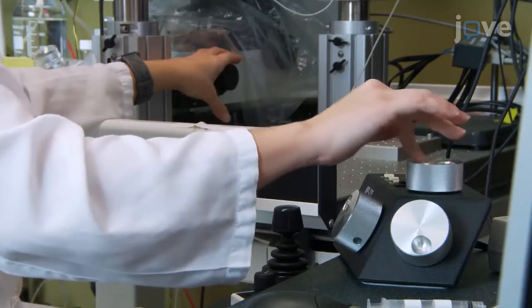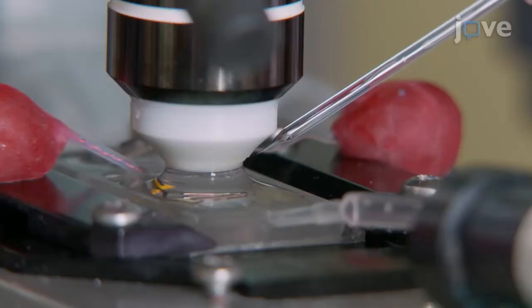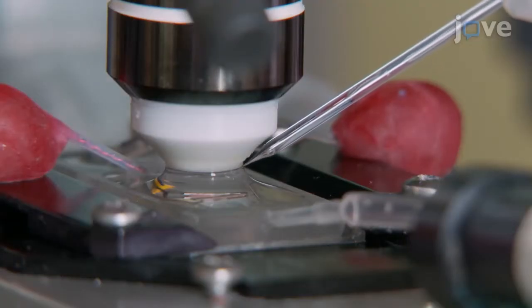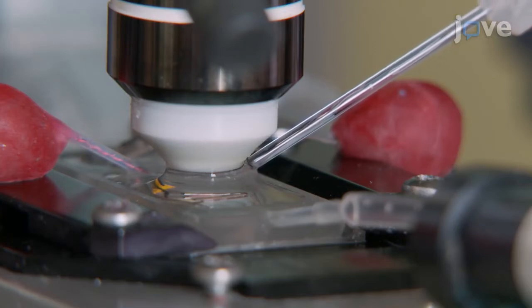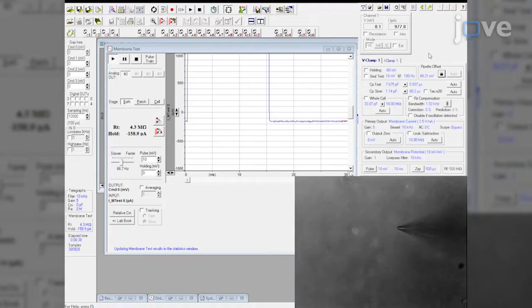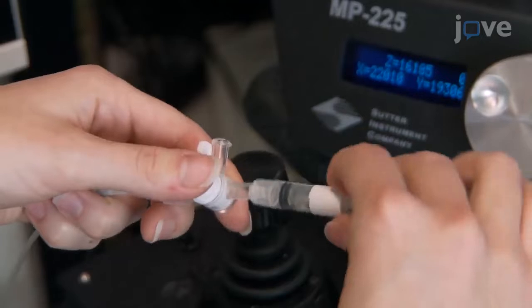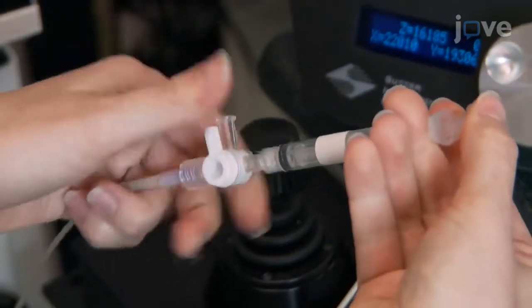To obtain whole-cell configuration, place the recording pipette just above the slice and offset pipette current in the voltage clamp mode. Apply slight positive pressure to the pipette and lock the stopcock.